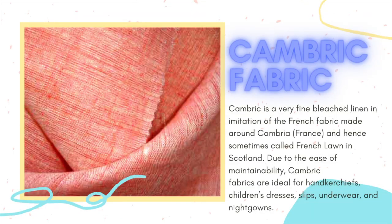Cambric fabric. Cambric is a very fine bleached linen, in imitation of the French fabric made from Cambria, France, and hence sometimes called French lawn in Scotland. Due to its easy maintainability, cambric fabrics are used for handkerchiefs, children's dresses, slips, underwear, and nightgowns.